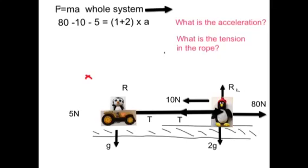We have the driving force of Cedric, 80 newtons, minus the resistance to his motion of 10, minus the resistance to Waddles' motion of 5 newtons. So that's the resultant forces acting on the system. We ignore the tensions because we're treating it as a whole system, and that is equal to the total mass of the system multiplied by its acceleration.